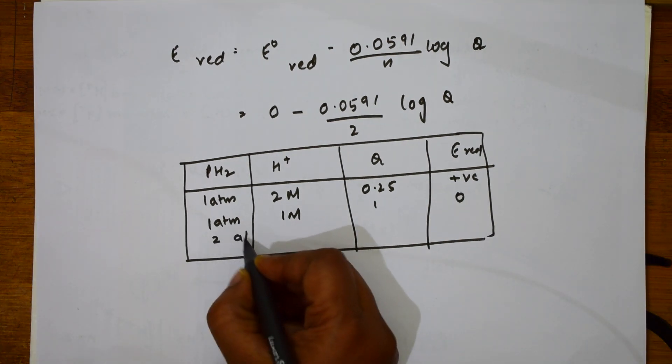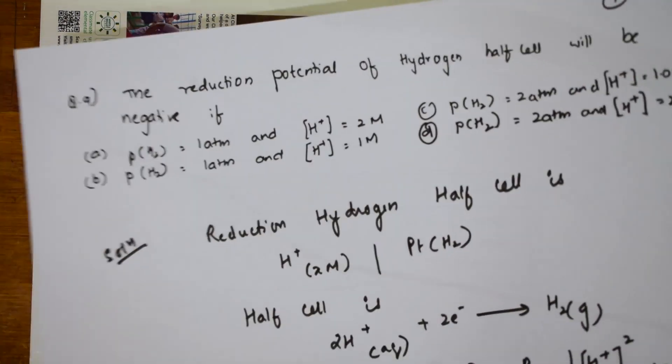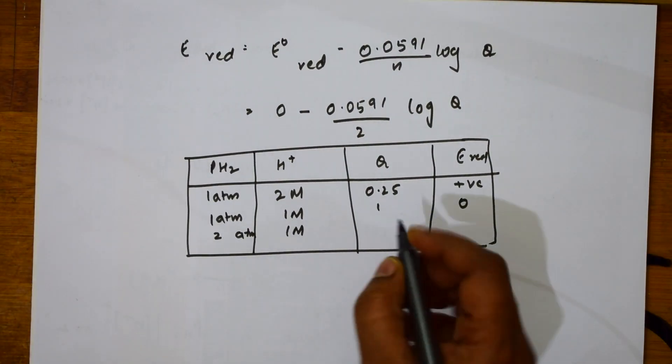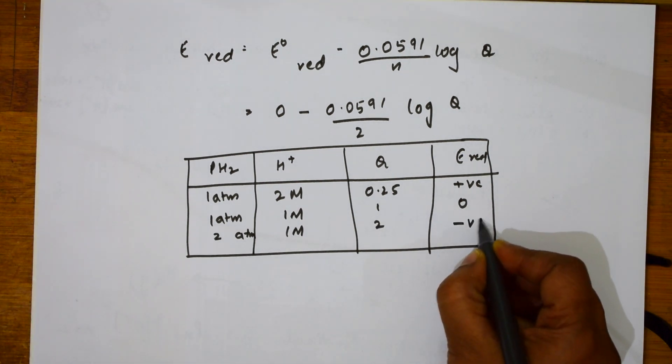Third case, 2 atmospheres. 2 atmospheres and 1 molar. Here, if I substitute 2, this is negative.